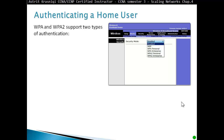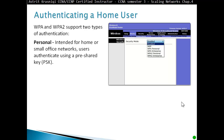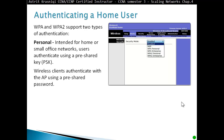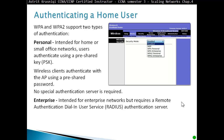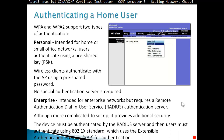WPA and WPA2 support two types of authentication. Personal: intended for home or small office network users who authenticate using a pre-shared key, PSK. Wireless clients authenticate with the access point using a pre-shared password, and no special authentication server is required. Enterprise: intended for enterprise networks which require a Remote Authentication Dial-In User Service, RADIUS, authentication server. Although more complicated to set up, it provides additional security. Devices must be authenticated by the RADIUS server and users must authenticate using the 802.1x standard, which uses Extensible Authentication Protocol, EAP.